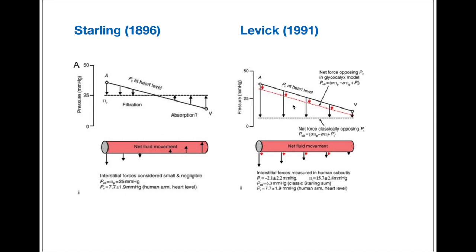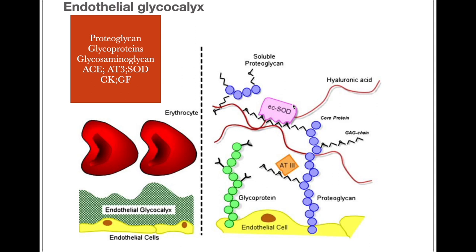Now we will discuss the endothelial glycocalyx and its role in the revised Starling Principle. The endothelial lumen is covered by a protective jelly-like layer known as the glycocalyx. This is a dynamic and complex biochemical structure consisting of proteoglycans, glycoproteins and glycosaminoglycans as structural components, along with antithrombin-3, superoxide dismutase, chemokines and growth factors. The endothelial cell is covered by this glycocalyx layer consisting of structural proteins, glycoprotein, proteoglycan and glycosaminoglycan chains.